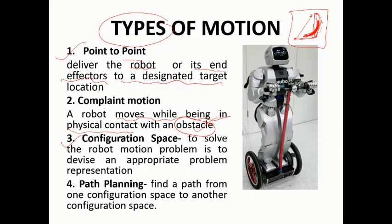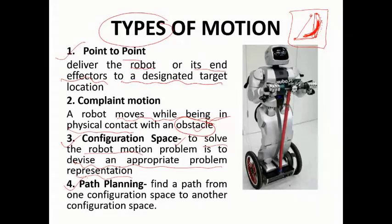The third type is configuration space motion. To solve the robot motion problem, we need to devise an appropriate problem representation so that we can configure the space effectively. Path planning involves finding a path from one configuration space to another.